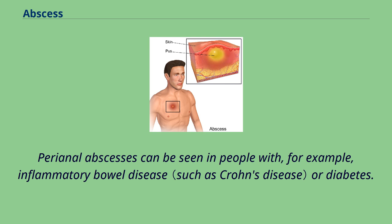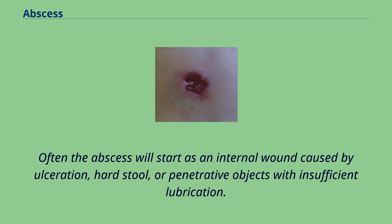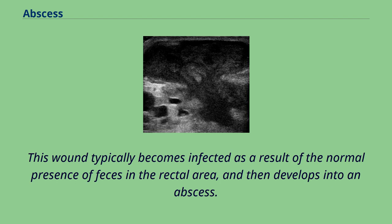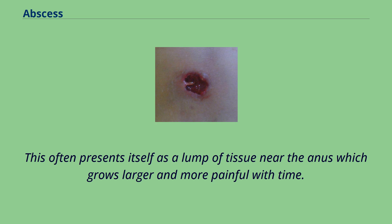Perianal abscesses can be seen in people with, for example, inflammatory bowel disease or diabetes. Often the abscess will start as an internal wound caused by ulceration, hard stool, or penetrative objects with insufficient lubrication. This wound typically becomes infected as a result of the normal presence of feces in the rectal area, and then develops into an abscess. This often presents itself as a lump of tissue near the anus which grows larger and more painful with time.